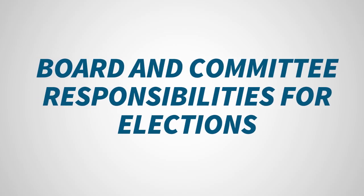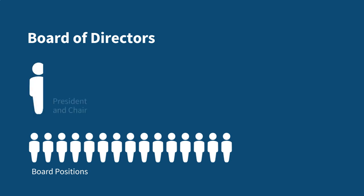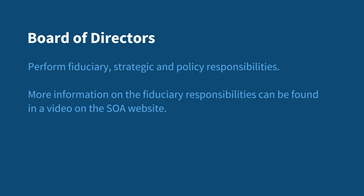So who is responsible for SOA elections? There are a few groups involved, starting with the board of directors. The board comprises 15 members plus three presidential positions: the president and chair, the president-elect and vice chair, and the past president. In October of 2021, the board approved title changes to help clarify the president's role as also chair of the board meeting. This group leads the organization and the actuarial profession through the SOA strategic plan, performing fiduciary, strategic, and policy responsibilities. You can check out a video on the fiduciary duties of a board member on the SOA website for more information.